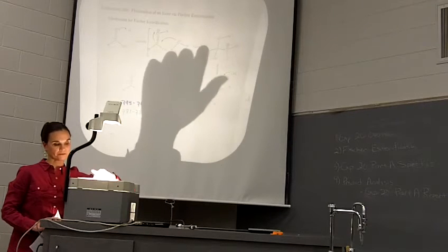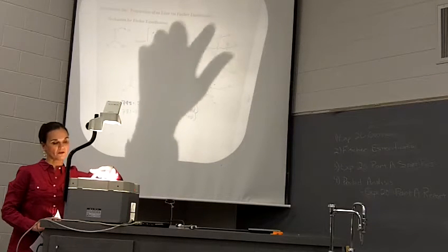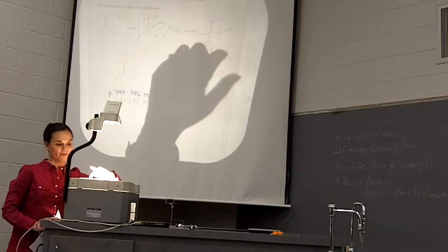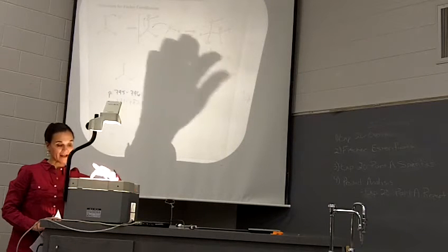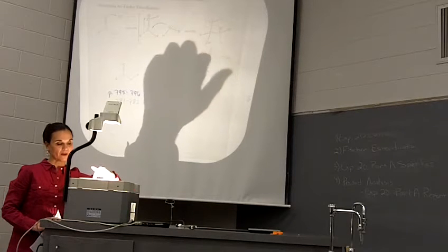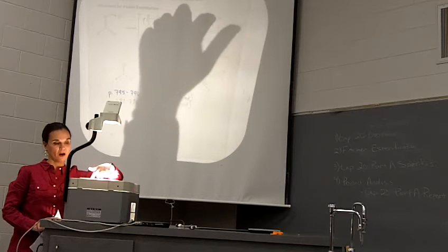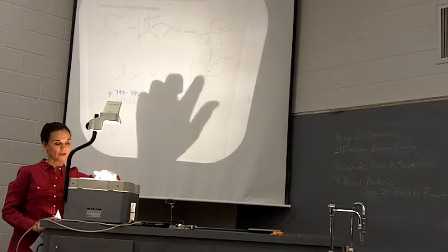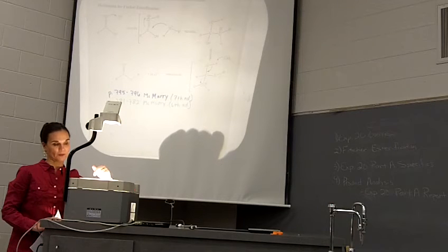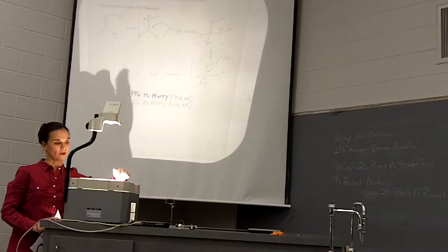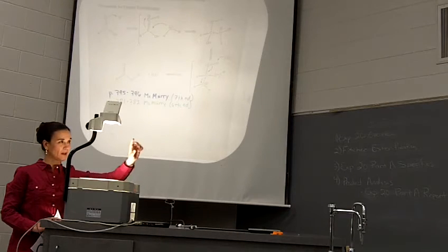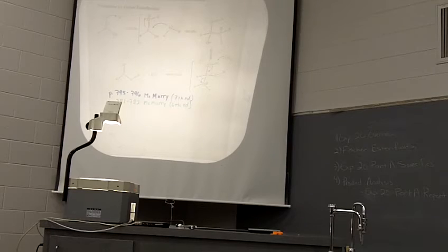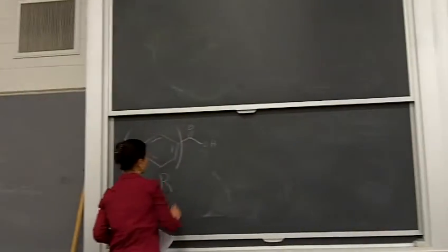The oxygen from our alcohol attacks the carbonyl, and we have movement of electrons to give a tetrahedral intermediate. Then water — or the conjugate acid — takes the proton that was originally on the carbonyl oxygen. We then have movement of electrons as we collapse down and lose water in the reaction, forming the ester product. The R group here is our 4-hydroxybenzoic acid starting material.